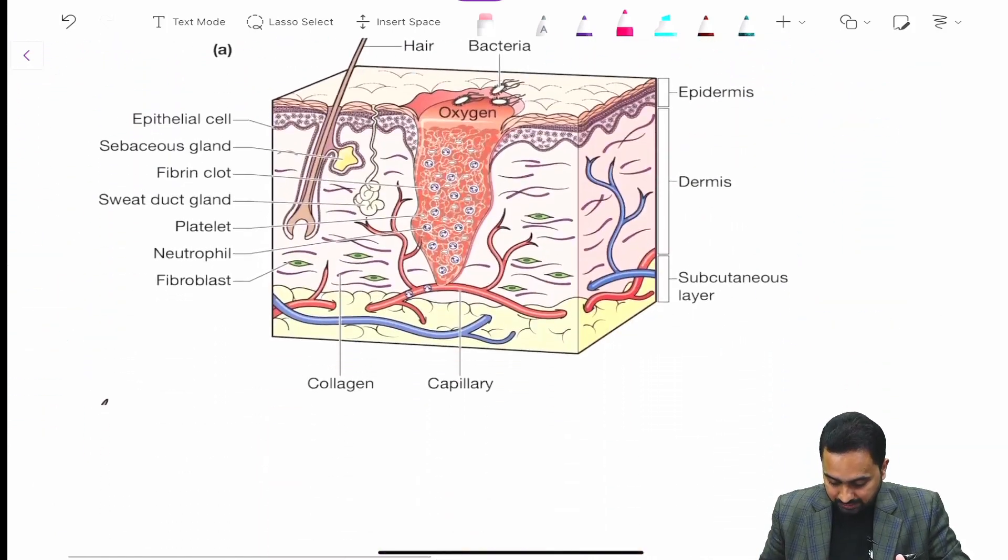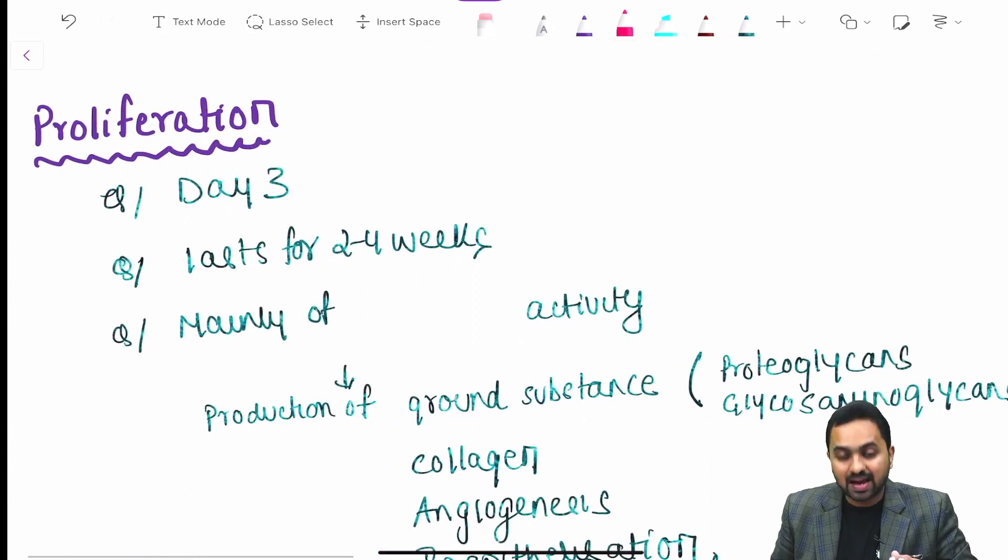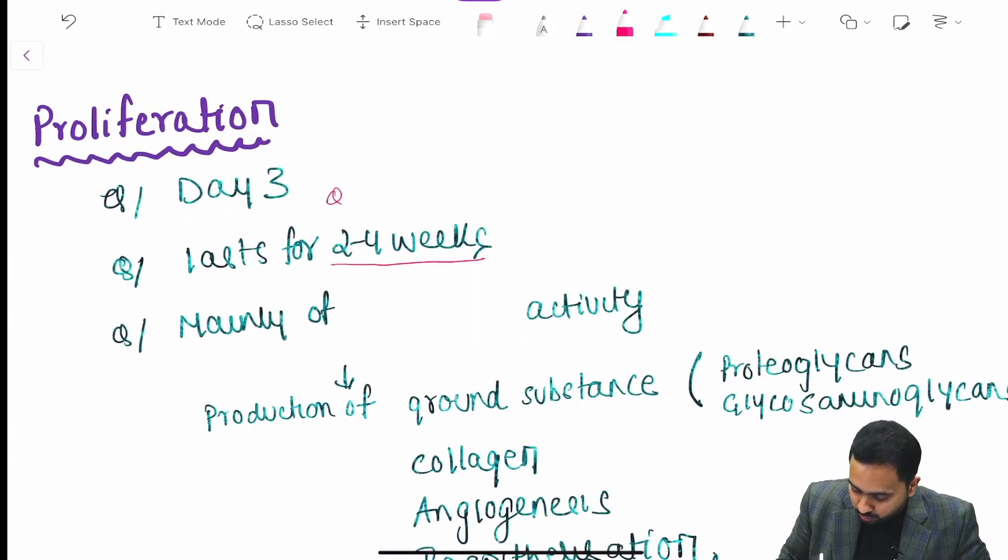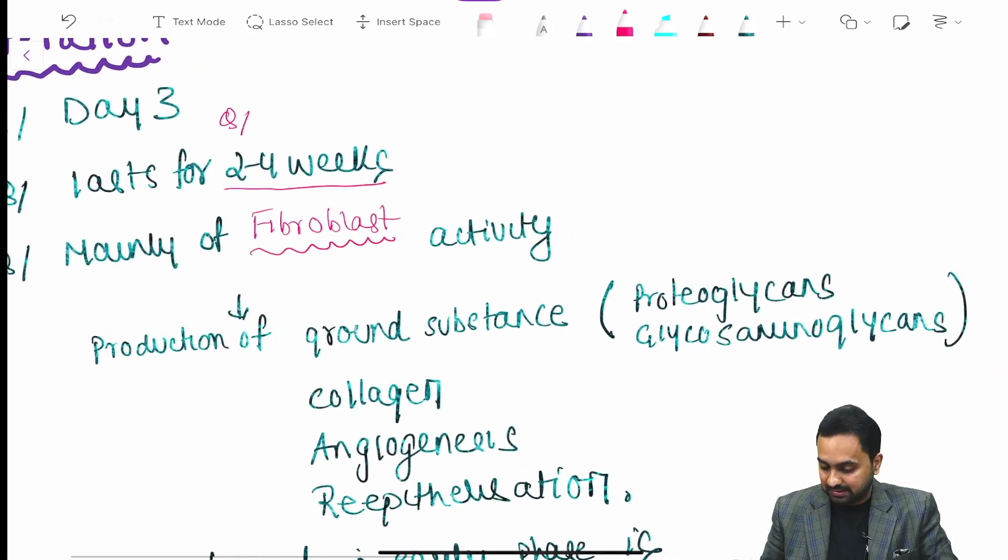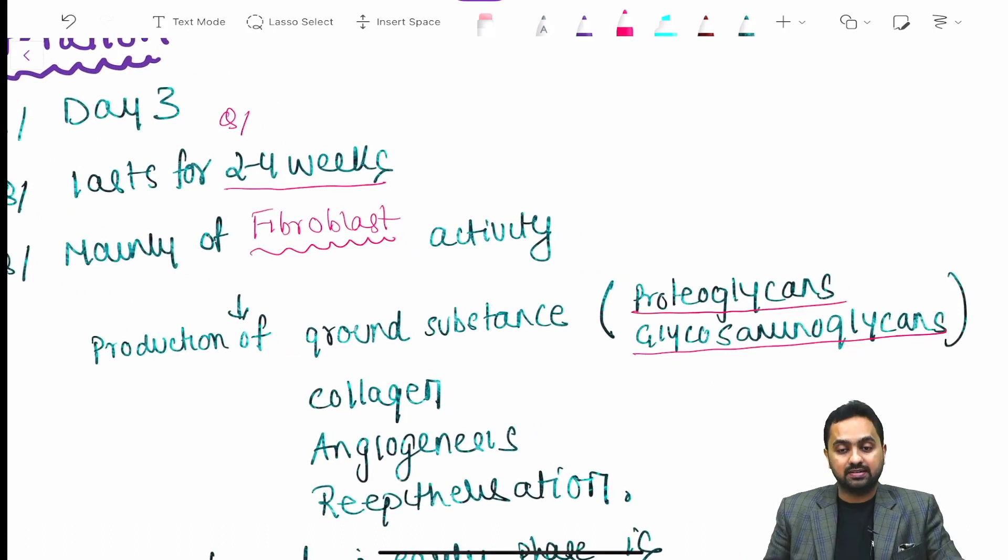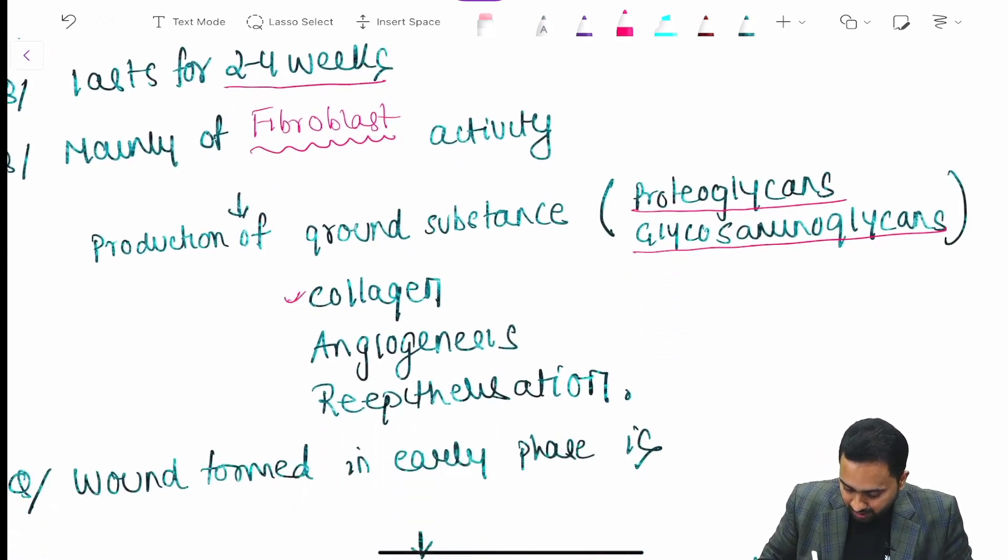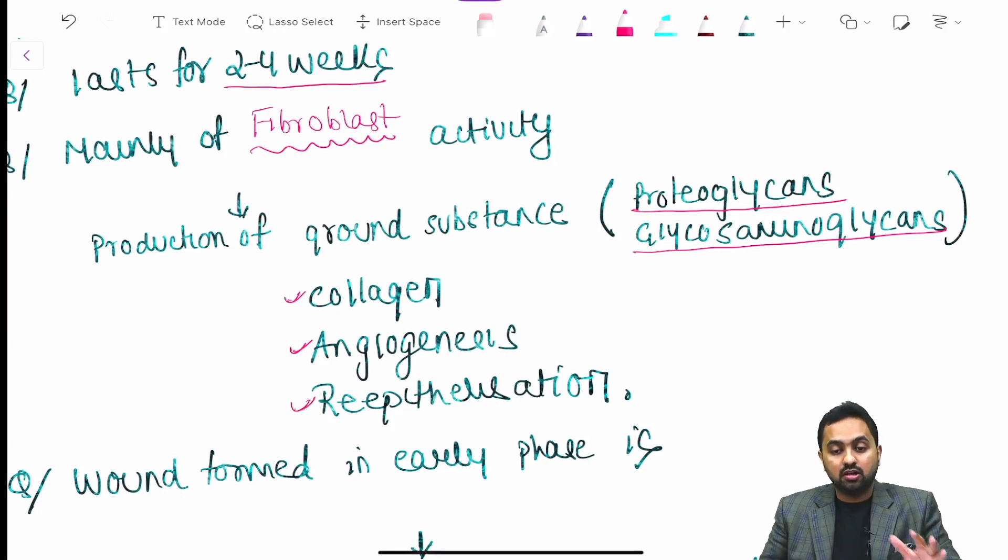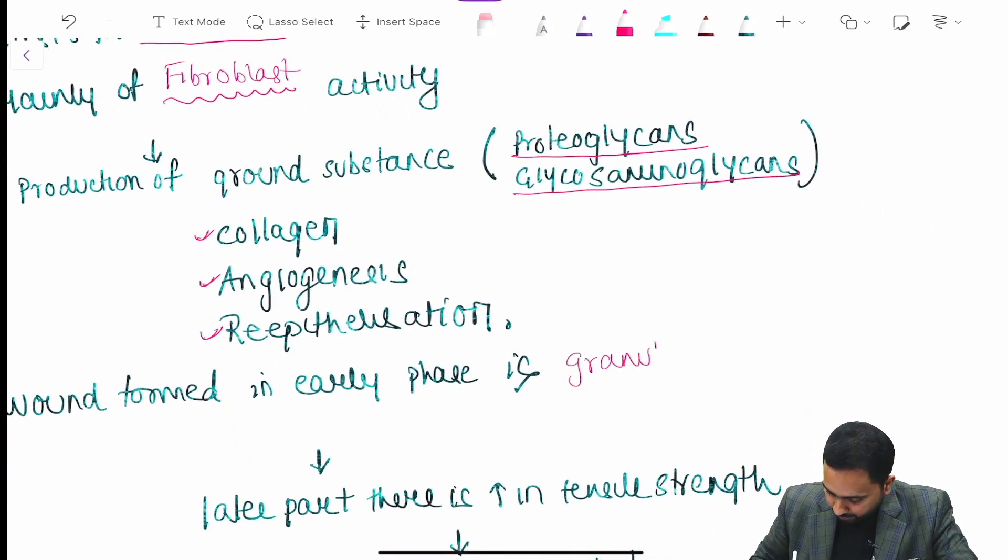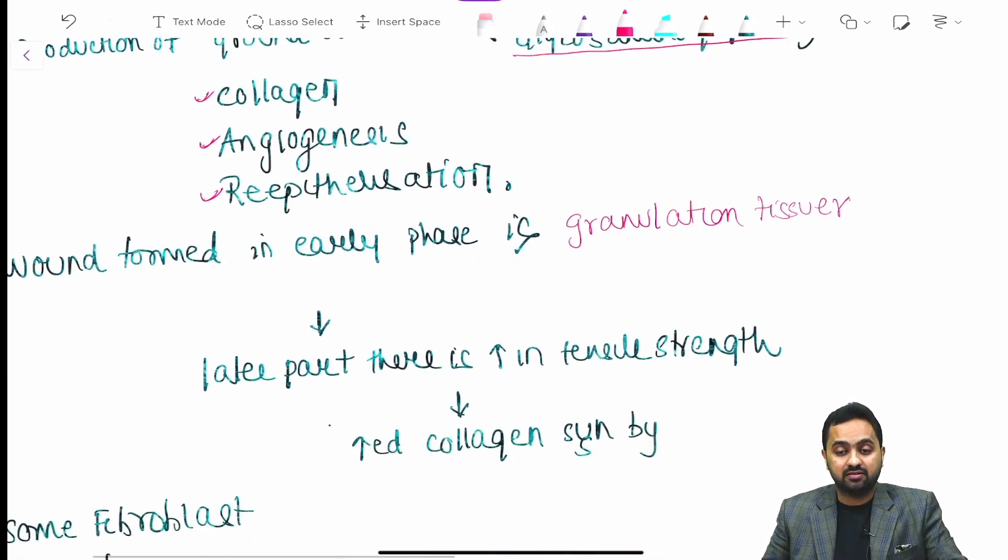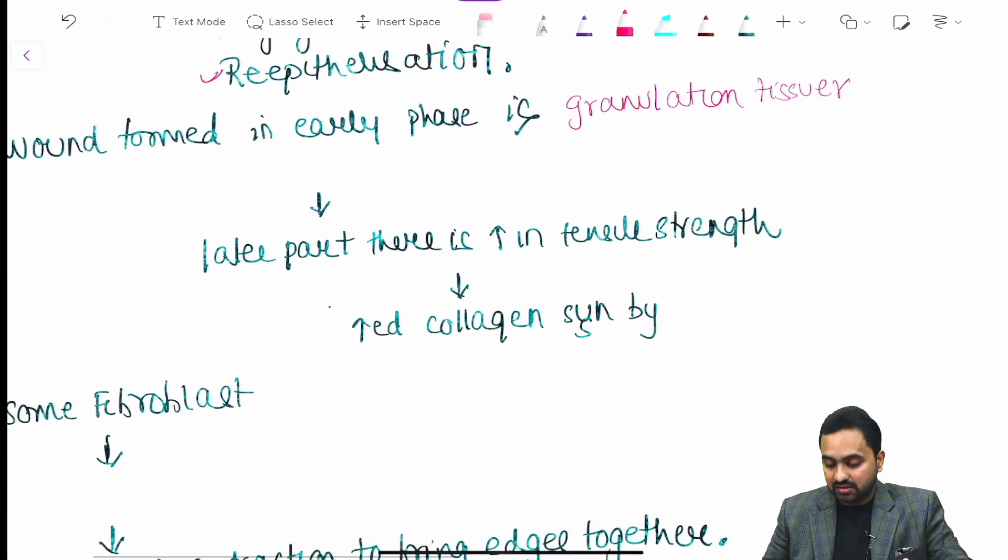Moving down to the next phase is your proliferation. It begins at day three and lasts for around two to four weeks. It consists mainly of your fibroblast activity. This fibroblast activity causes the production of your ground substance like your proteoglycans and glycosaminoglycans and production of your collagen, angiogenesis and re-epithelialization. Wound formed in early phase is your granulation tissue.